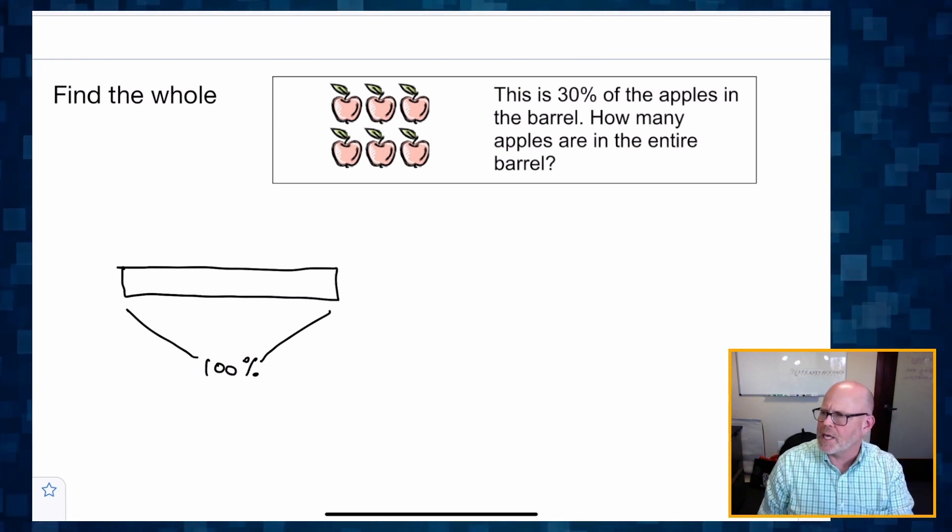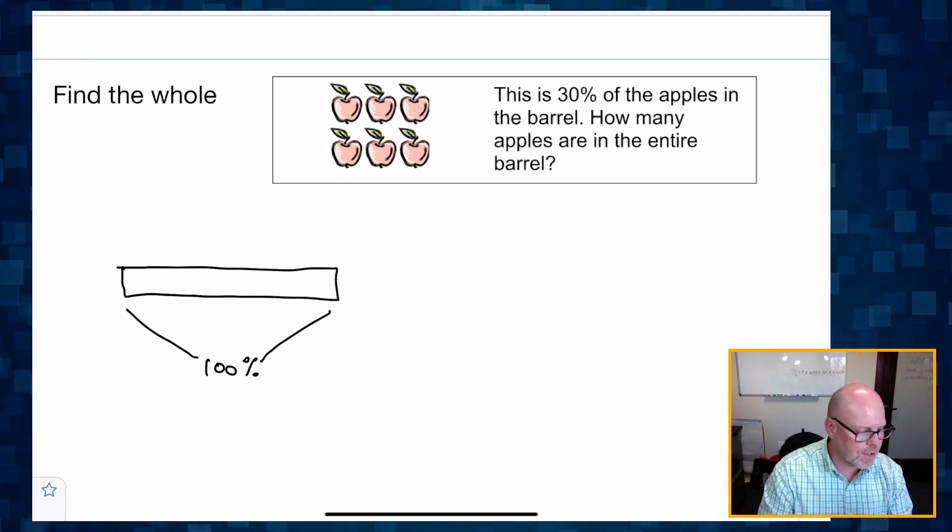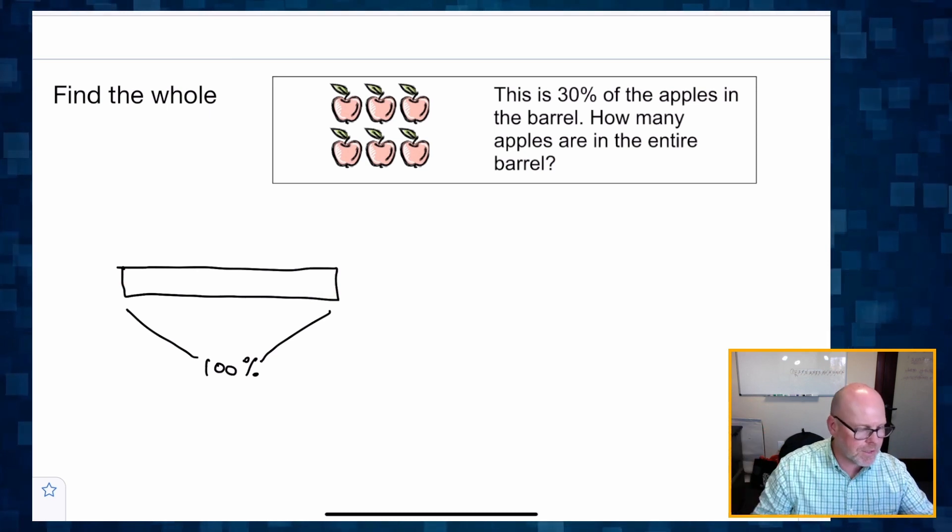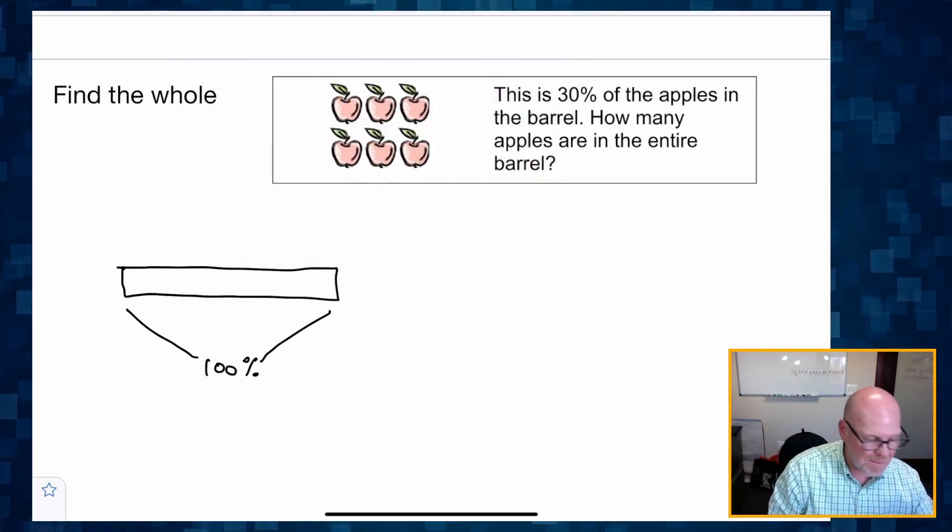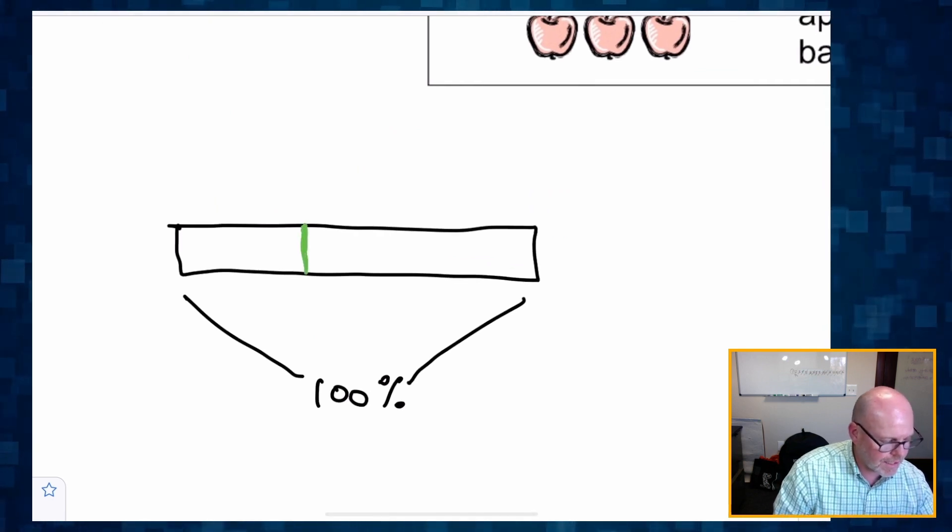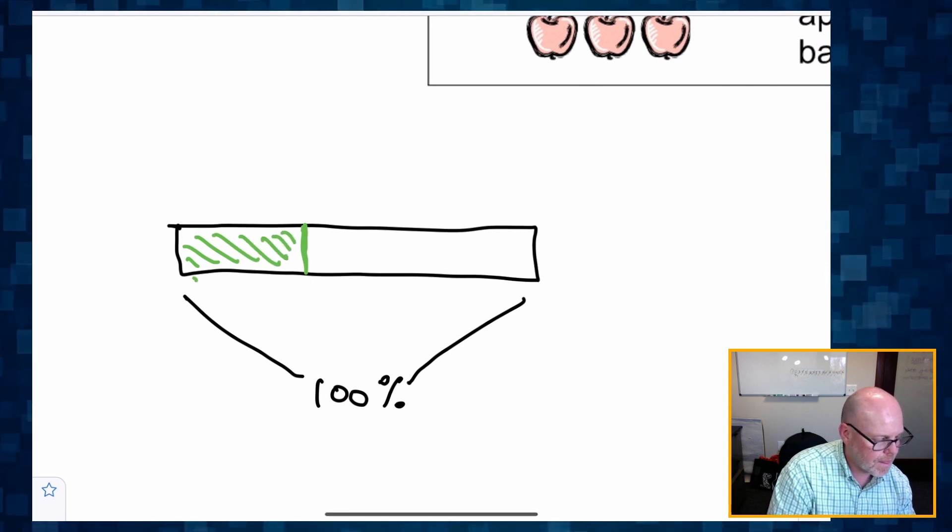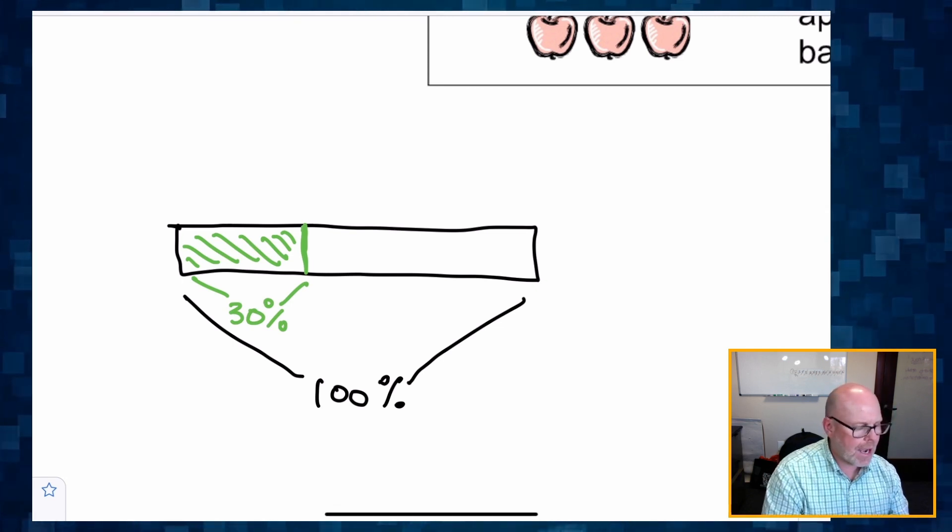So those six apples represent 30%. Well, if this entire tape represents a hundred percent, then I don't know where 30% is. We can estimate it's, I don't know, it's less than half. And we'll just call this, we'll just say this piece right here represents our 30%. There's our 30%.